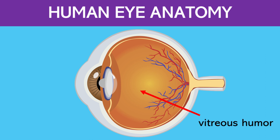This is called the vitreous humor. This is a gel-like substance that fills the space between the lens and the retina. It helps maintain the eye's shape and allows light to pass through to the retina.